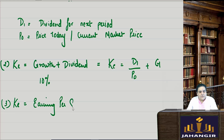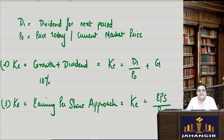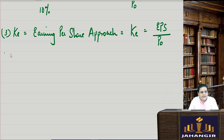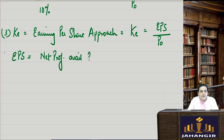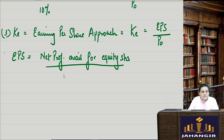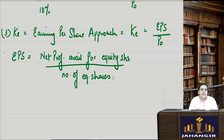Next is the Earnings Per Share method for cost of equity: ke = EPS / P0, where EPS is the earning per share. EPS is nothing but the net profit available for equity shareholders divided by the total number of equity shares. There are three different formulas for cost of equity; based on what is given in the question, we can use any one.